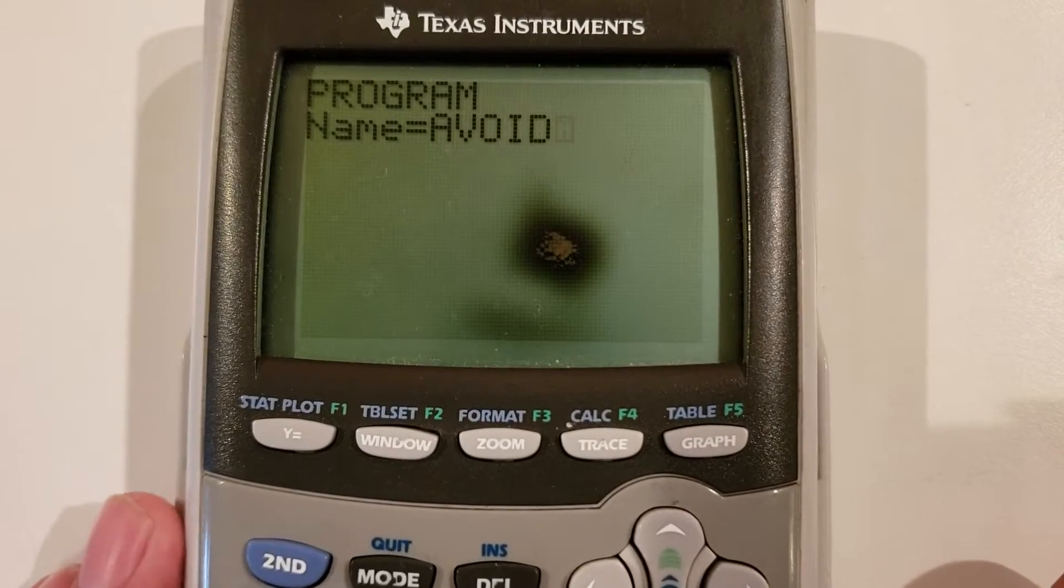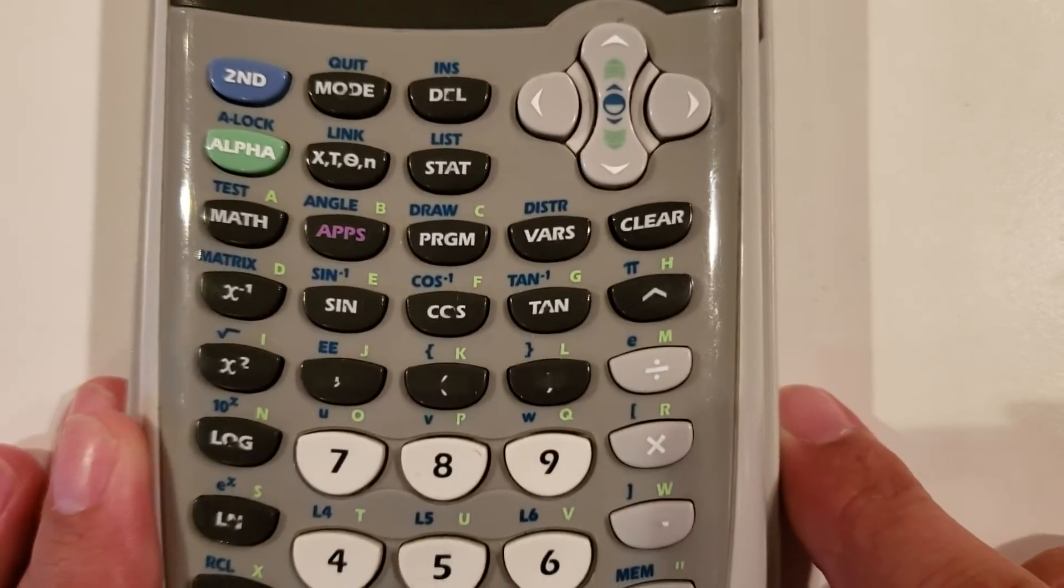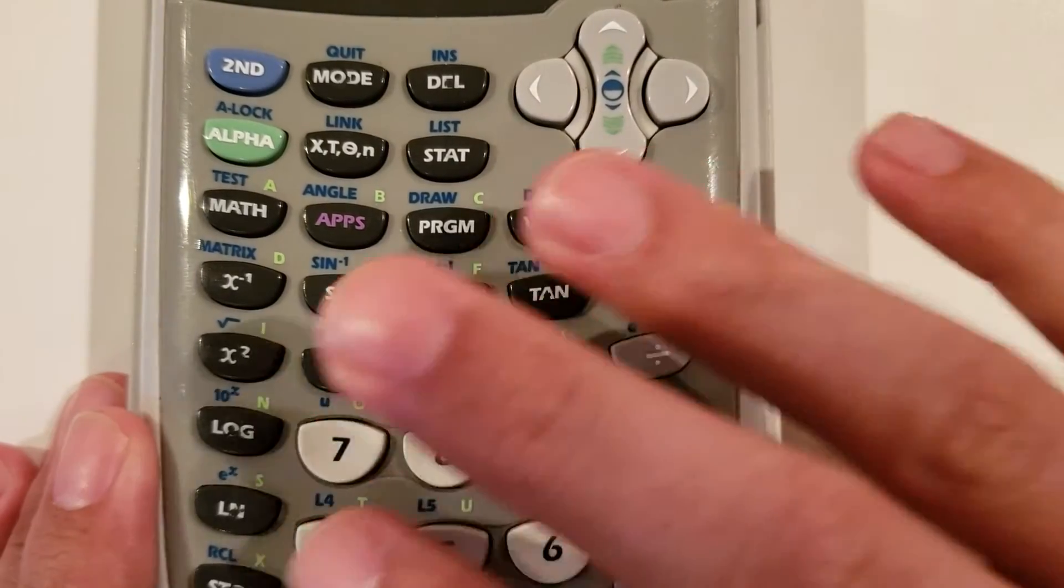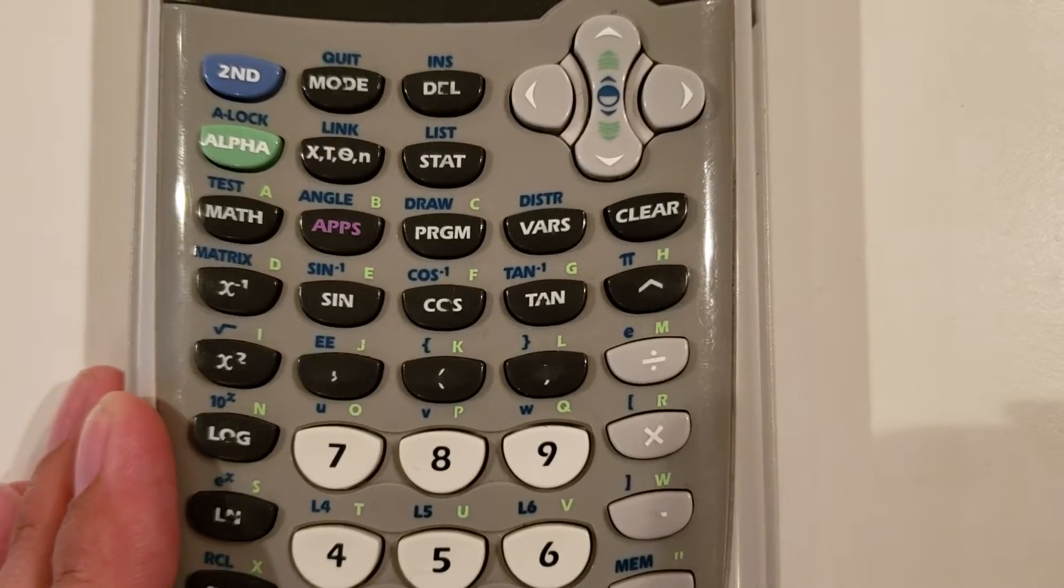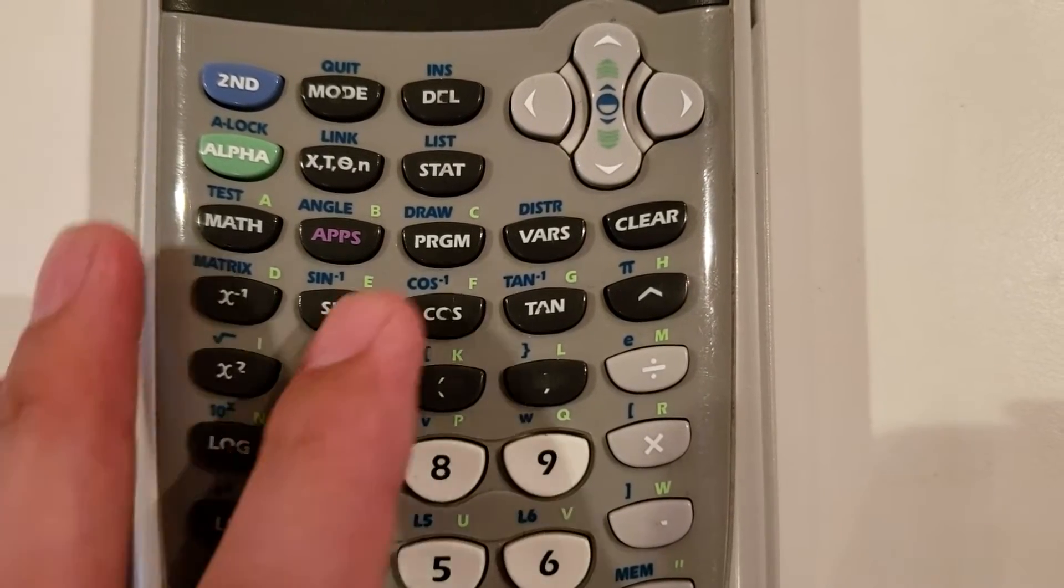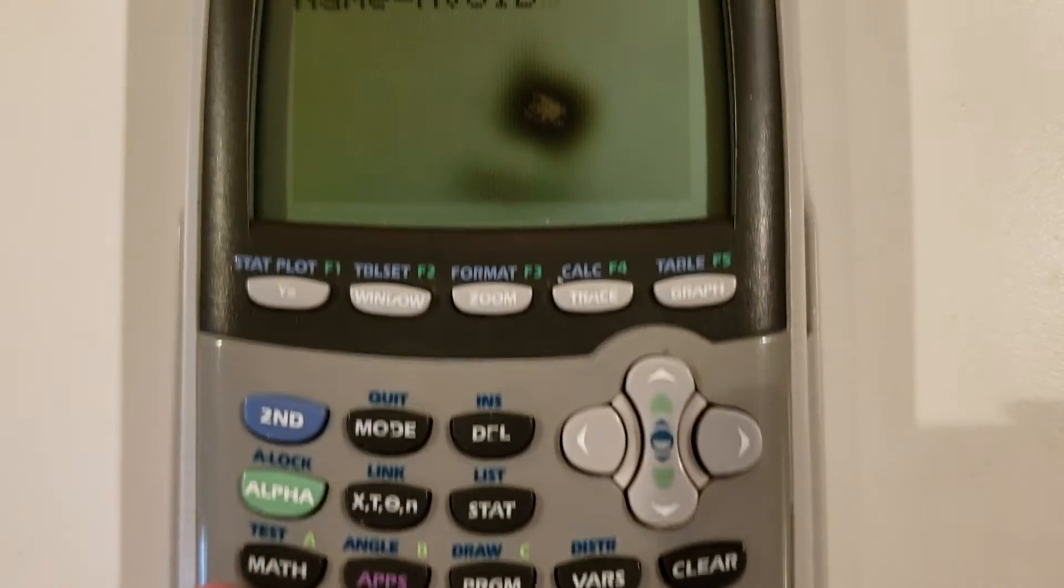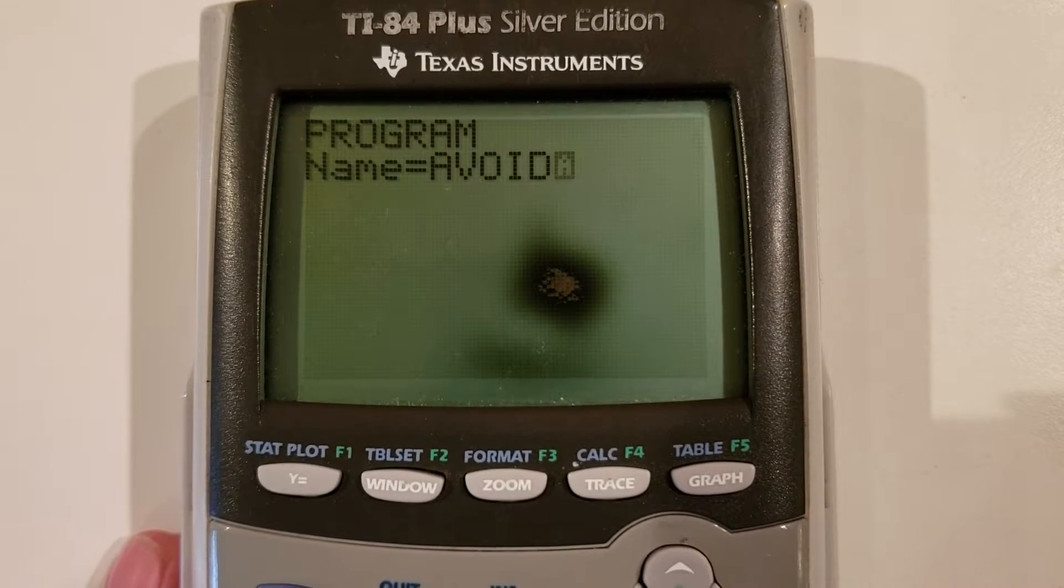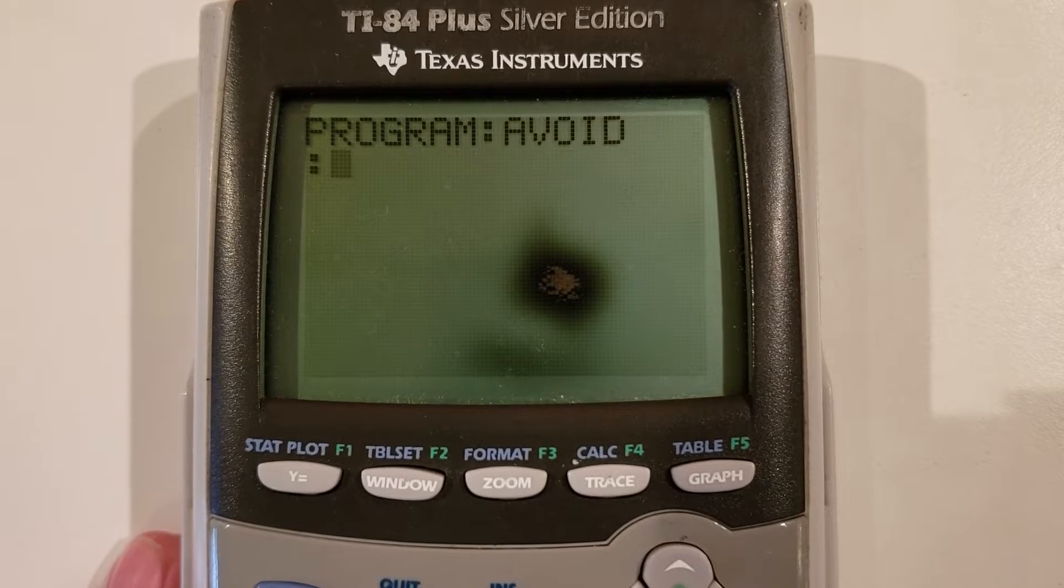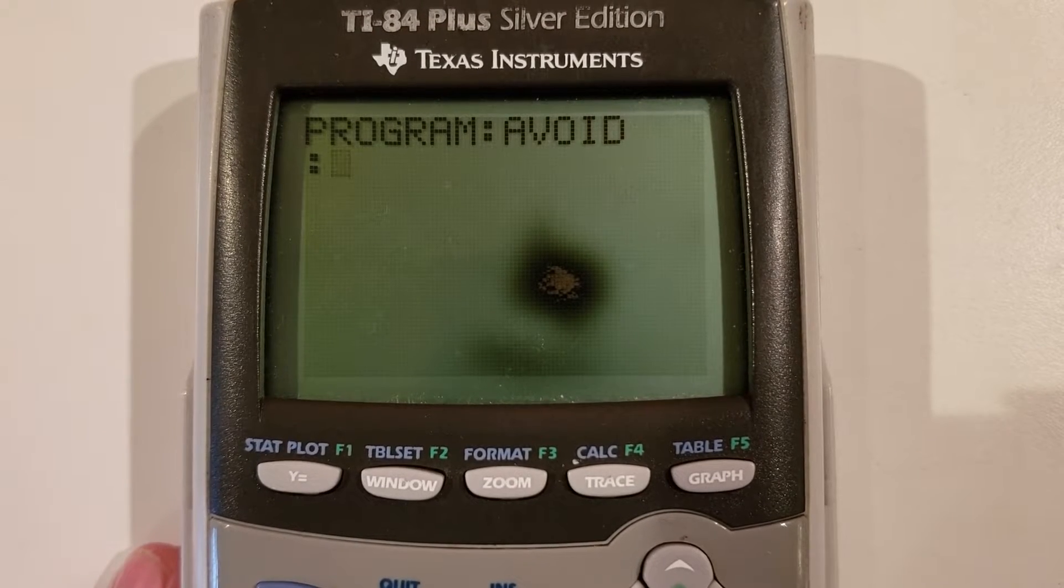Programming on a calculator is less elegant than typing on a keyboard. You don't have access to typing in commands, you have to find them through their menu shortcuts. Before we start, I need to make the program. I'm going to call it avoid. The program is now created, and I can begin typing.